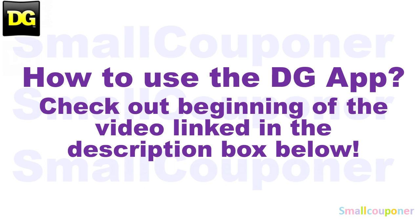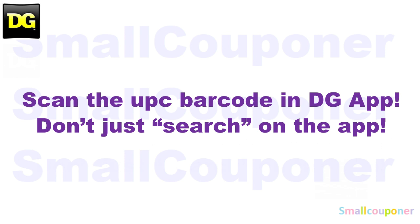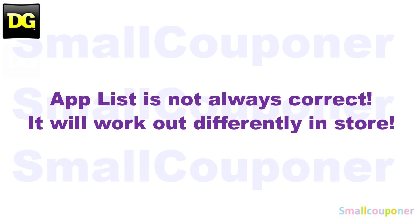For how to use the DG app, make sure to check out the beginning of the video — link in the description box below. Make sure that you scan everything in your cart into the DG app just to make sure that the digitals are still attaching to the products you are purchasing before you check out at the register, especially for the Gain products because they only work on certain scents and even certain packaging. Scan in the UPC barcode of the product into the app — don't just search for it on the app. The app list is not always correct; it will work out differently in-store.